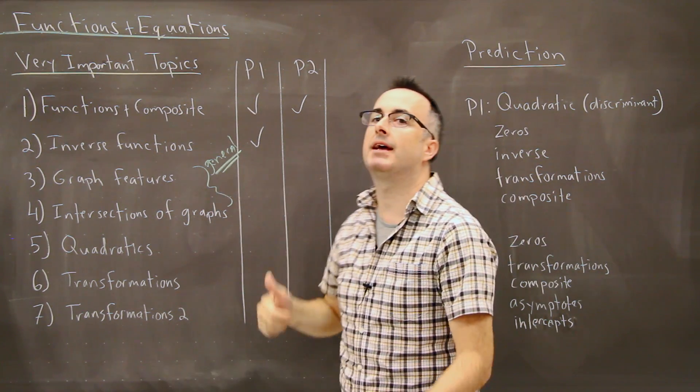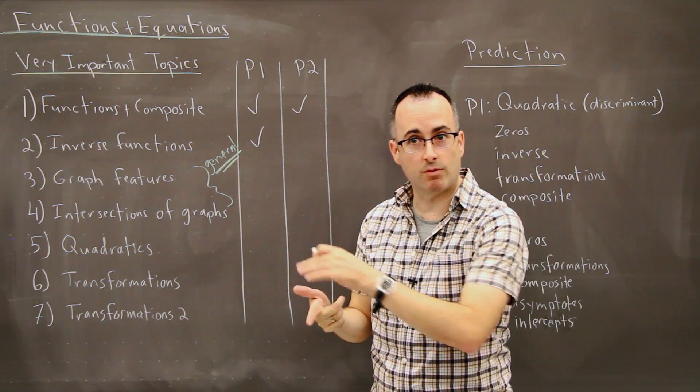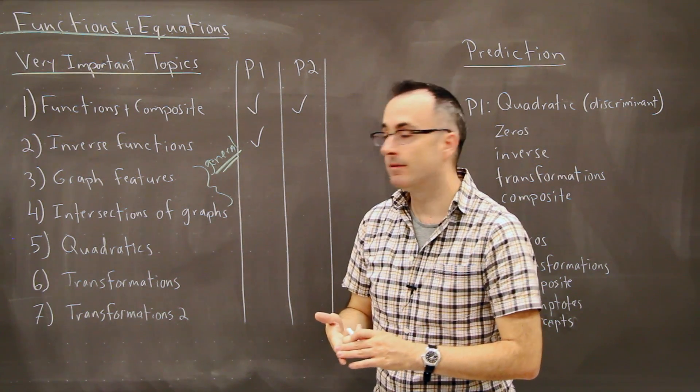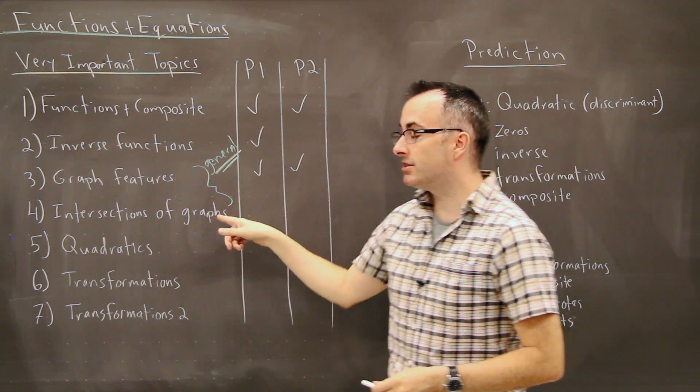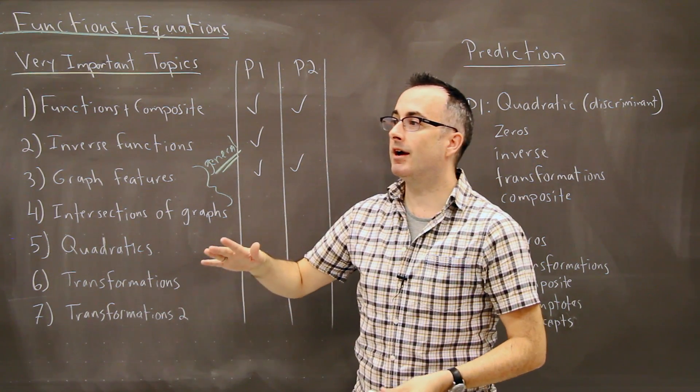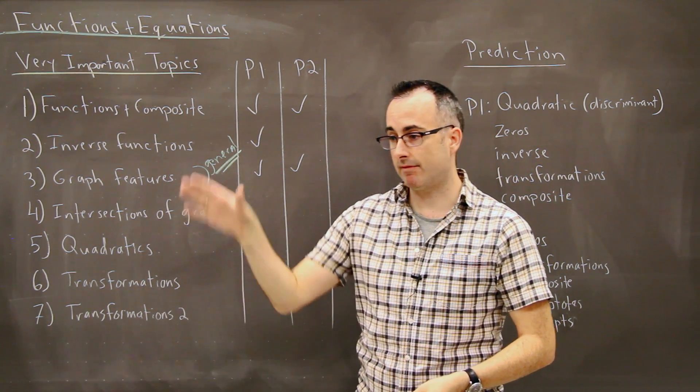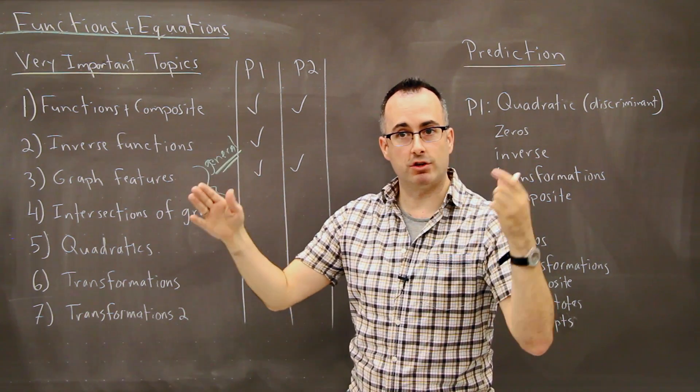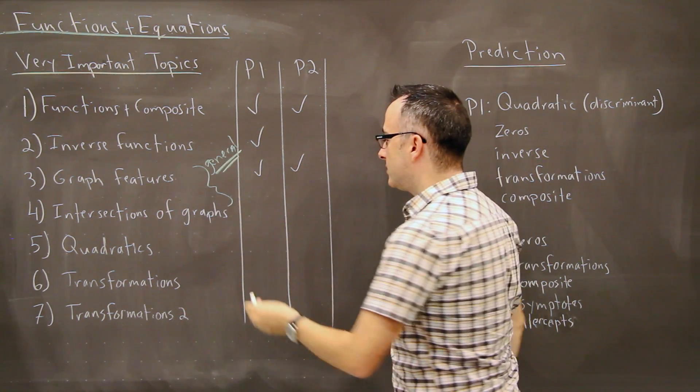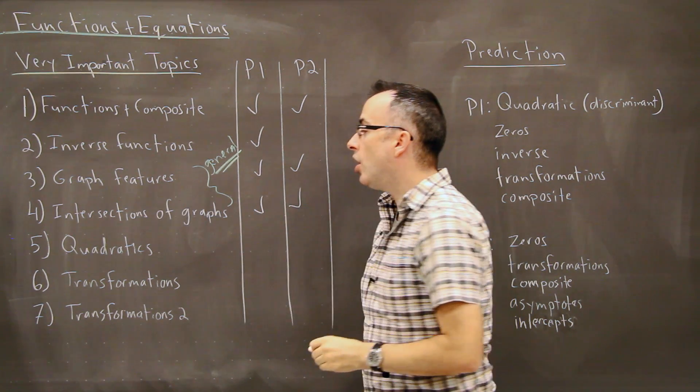But these show up, graph features, these will be things like asymptotes, intercepts, in other words where they cross the x and y intercept, max and min. And those ones show up pretty evenly on paper ones and twos. Intersections of graphs, this whole idea is trying to solve an equation by graphing both sides of the equation. So let's say you have some big junk on the left equals some big junk on the right, graph the two, find out where they meet, and those are your answers. So this here is how we do those, they're found pretty often on both of them.